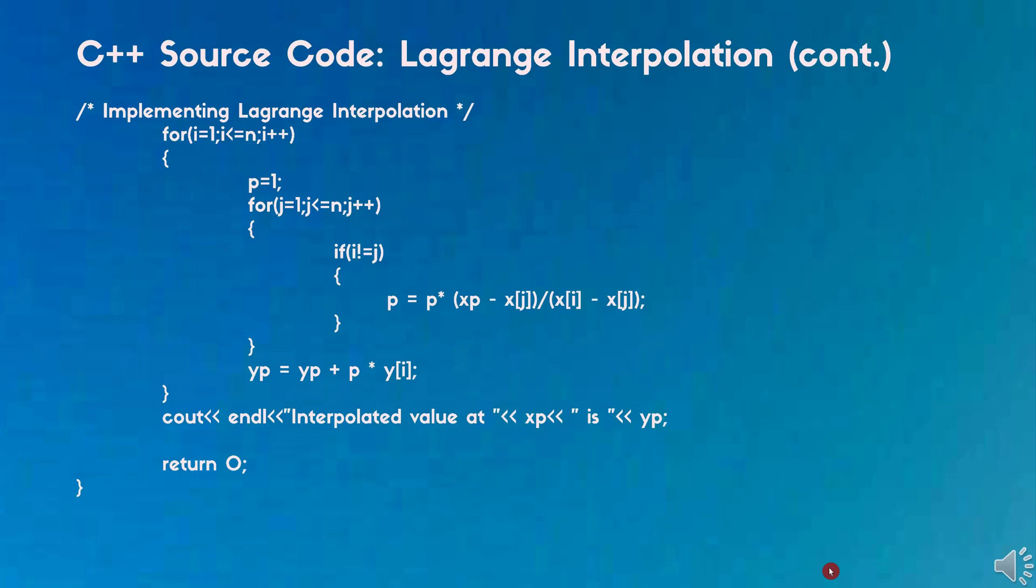If i equal to j, the equation becomes undefined because when i equal to j the denominator becomes 0, so we are using the condition i not equal to j. Then we are going to find the p value. The p value is given by p equals p times xp minus xj divided by xi minus xj. After getting the p value, we are now going to find the interpolated value at xp, which is yp.